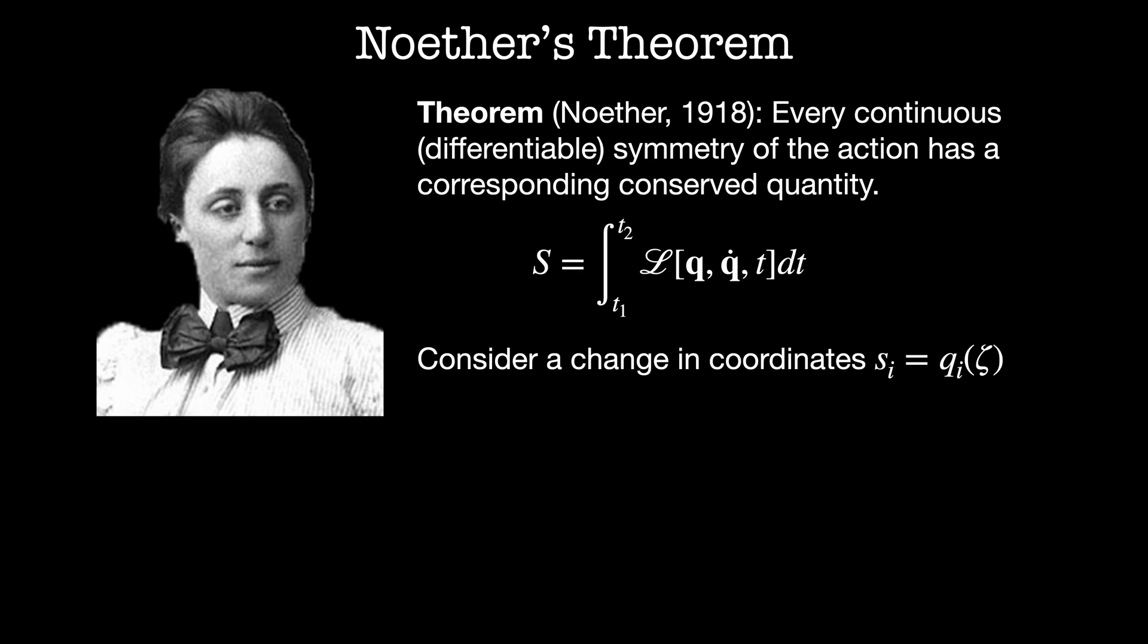Consider a change in coordinates. We've done this before from Euclidean coordinates to generalized coordinates, but here we'll call our new coordinates s. They are functions of some continuous parameter zeta for each of the original qi's. We say that the action has a continuous symmetry if the Lagrangian in the new coordinates s, s dot and t is equal to the Lagrangian in the original coordinates q, q dot and t for all values of the parameters zeta.